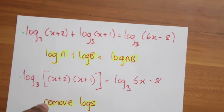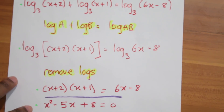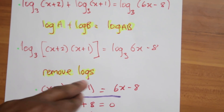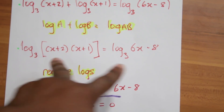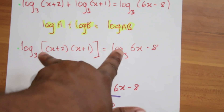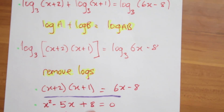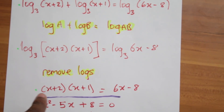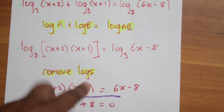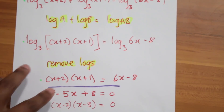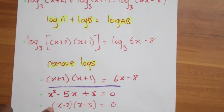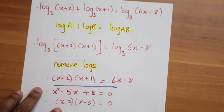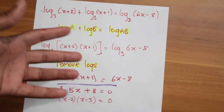So you group them into one, then you can remove the logs. When you group them up, remove the logs from both sides — gone. From here you expand the brackets, bring across terms, get a quadratic, factorize that, and you get your answer. That was the 2015 question on logs.